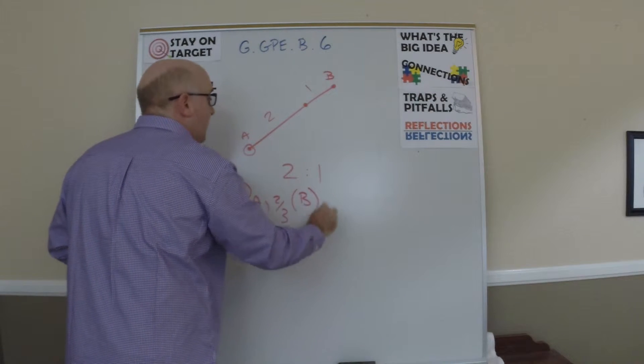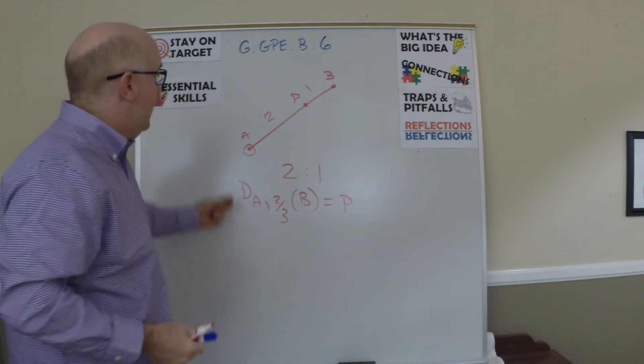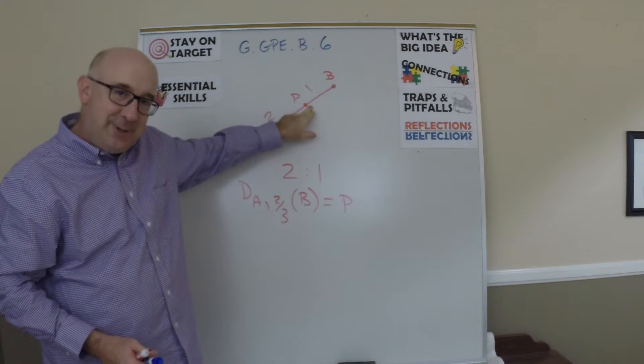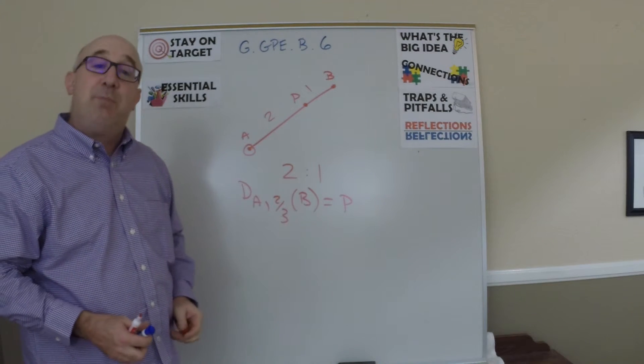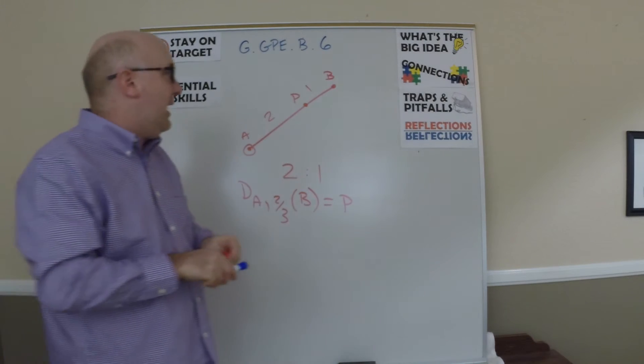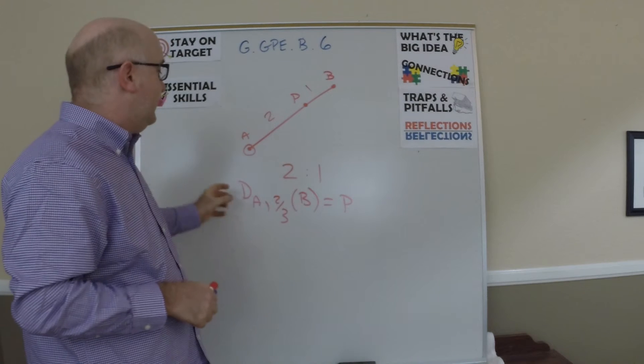Because if we dilate out of A, two-thirds of the distance would land us right here and we would have our location that would partition it in a two to one ratio. So this is a nice connection to the dilation stuff we did earlier.